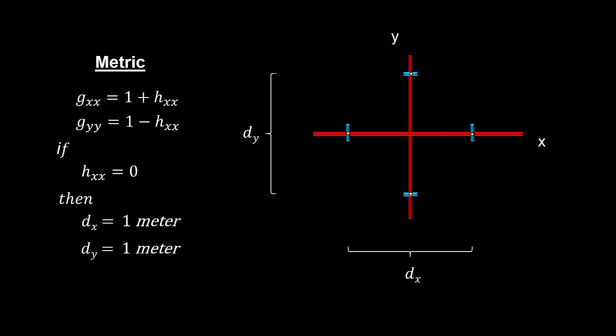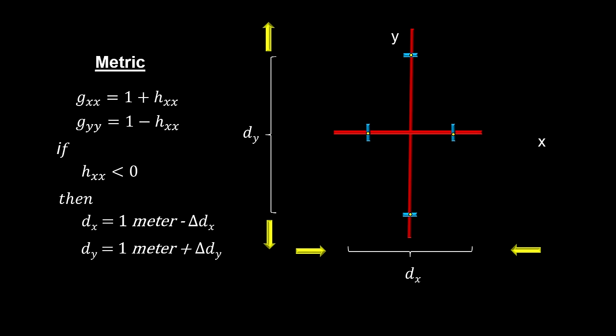When h returns to zero, the distance between these points returns to one meter. When h is less than zero, the distance between the two points on the x-axis will become shorter than one meter, and the distance between the two points on the y-axis will become longer than one meter.